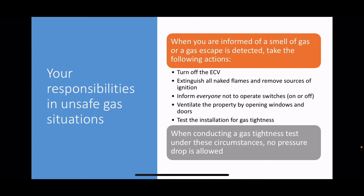When you're on site and you either smell gas or are informed of it: turn off the ECV, extinguish all naked flames, inform everyone not to operate switches on or off, ventilate the property. Once you've done all that and got everybody safe, test the installation for gas tightness. Here's an important exam question: under this situation, you are not allowed any pressure drop on your tightness test. Normally there's a permissible drop - could be four, six, or up to eight millibars depending on the meter - but where someone has reported the smell of gas, you are not permitted any drop at all.